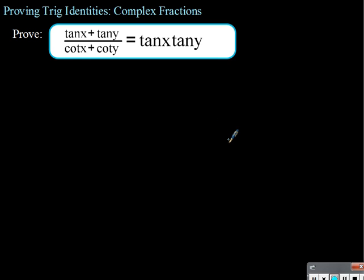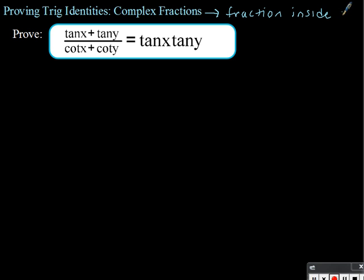We're going to start with an example about how to prove trig identities when there are complex fractions involved. A complex fraction is just a fraction inside of a fraction. As always, we're going to start by working with one side and leave the other side alone. We're going to pick the side with the fraction on it because there's more going on, which means we have more to work with.